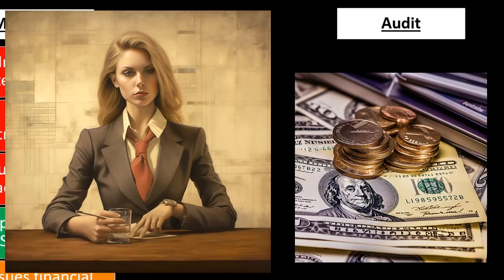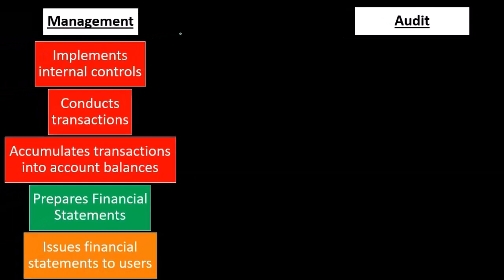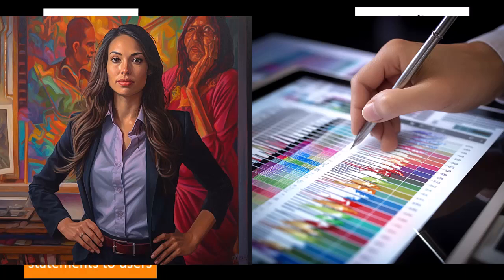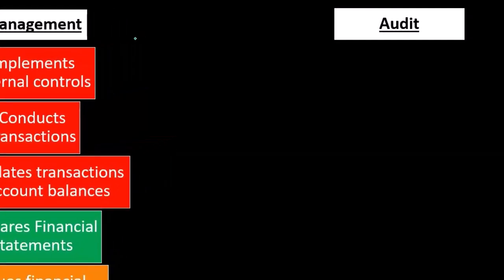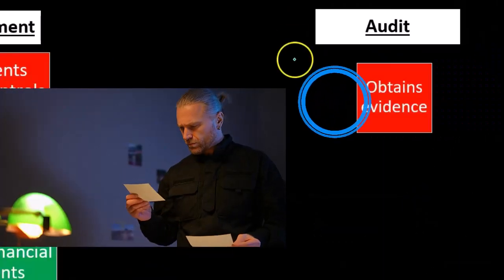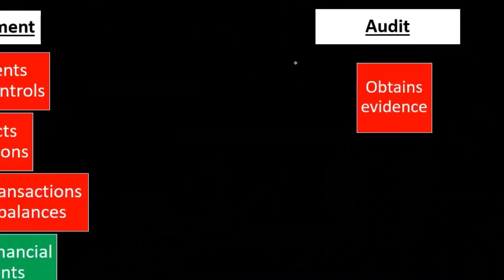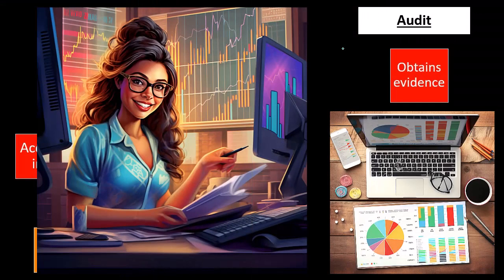When the audit comes into play, management has already completed these steps — the time period has passed or is close to passing. The auditor then plans the engagement and begins looking into the accuracy of the financial statements: have they been put together in accordance with generally accepted accounting principles? The auditor obtains evidence to determine this.